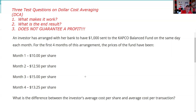Test question number three: dollar cost averaging does not guarantee a profit. I could easily make up an exhibit where your average cost still results in a loss based on your total investment. Outside of testing fantasy land, you'd be hard-pressed to convince me that someone dollar cost averaging in a mutual fund, if they stick with it long enough, won't come out ahead — but we never use the words 'always' or 'guarantee' in the securities industry.